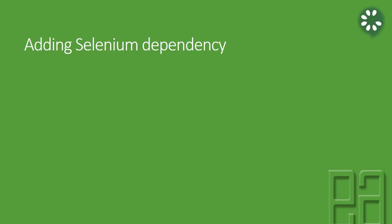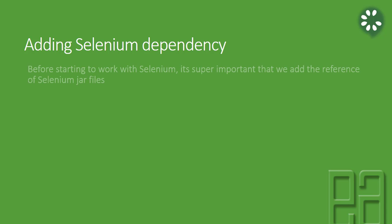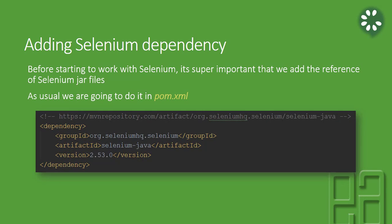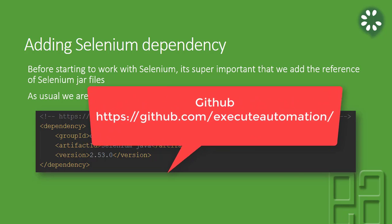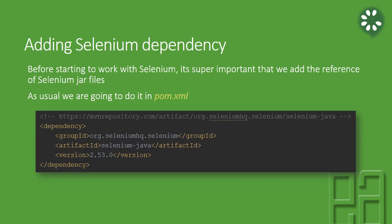When starting to work with any library, we need to add the dependency for that particular library. Selenium is a library and we need to add its dependency. The jar file we're going to add to the pom.xml file is org.seleniumhq.selenium — that's the group ID — and the artifact ID is selenium-java. We need to add this jar to our existing Cucumber project from Section 1. The Section 1 complete source code is available on GitHub.